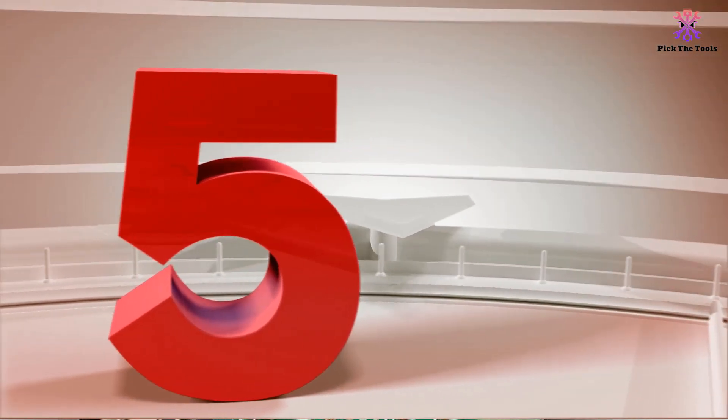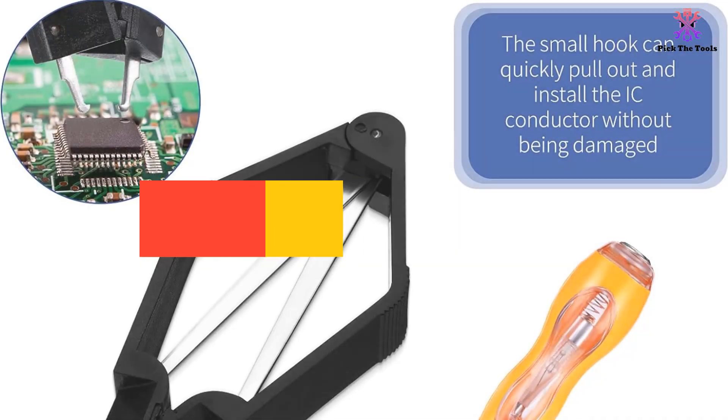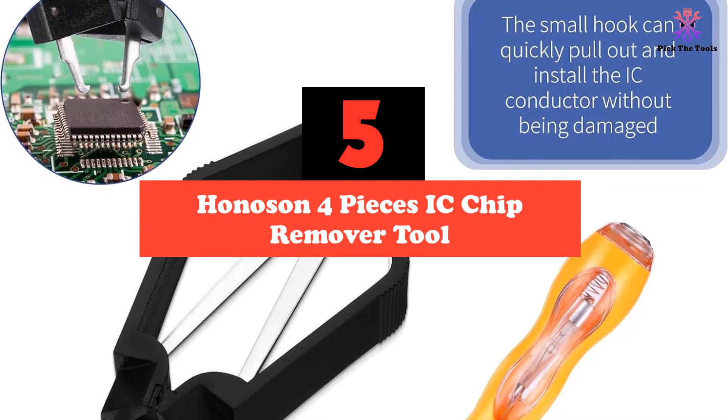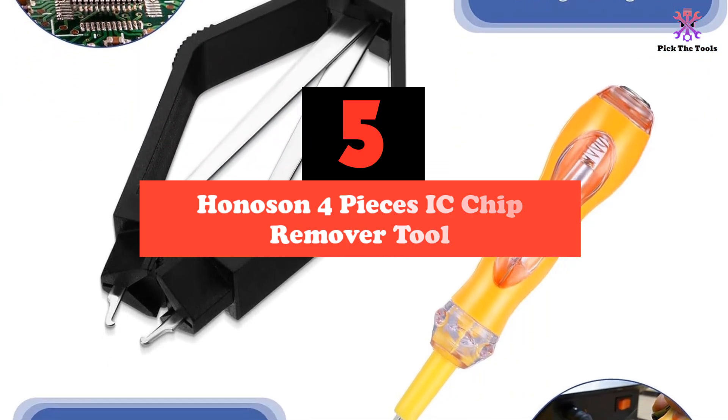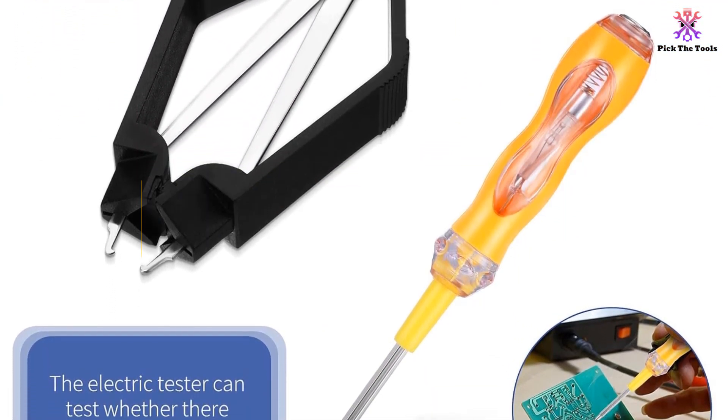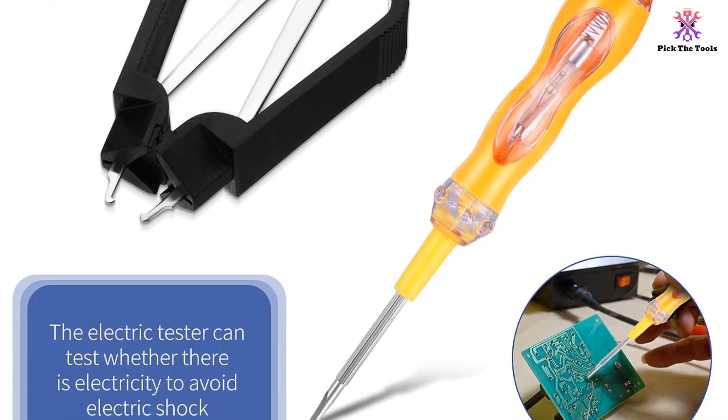Starting at number 5, we have the Honeson 4 Pieces IC Chip Remover Tool. This 4-piece IC chip remover tool set is made of quality metal and plastic with a strong grip, perfect for disassembly of electronic components and jewelry making.